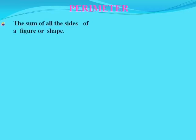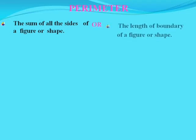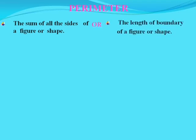First we should know what perimeter is. The sum of all the sides of a figure or shape is called perimeter. Or we can say, the length of the boundary of a figure or shape is called perimeter.